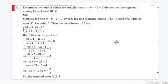Determine the ratio in which the straight line x minus y minus 2 equals 0 divides the line segment joining (3, -1) and (8, 9).